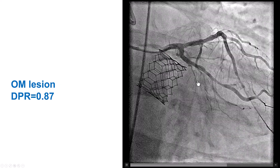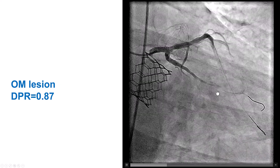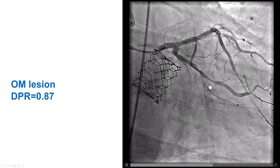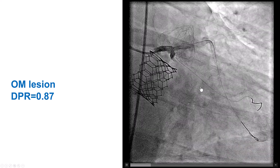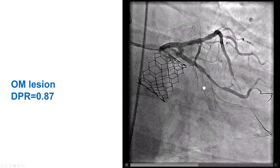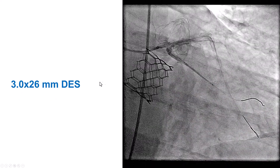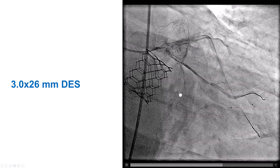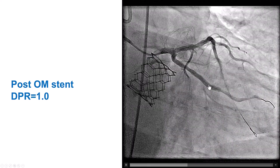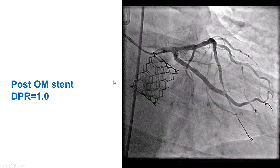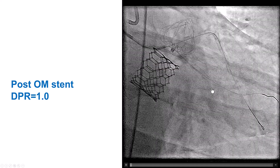There was also a lesion in the obtuse marginal branch, and we performed physiologic assessment. The DPR was 0.87, so we stented it with a 3.0 mm drug-eluting stent, achieving a post-PCI DPR of 1.0.